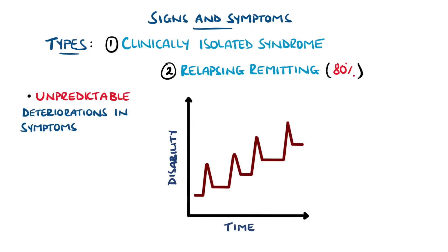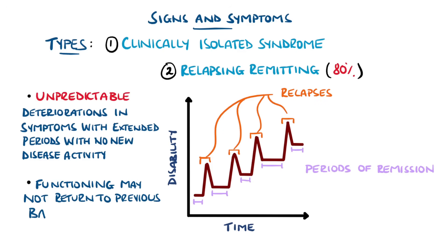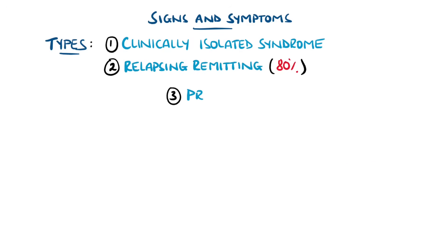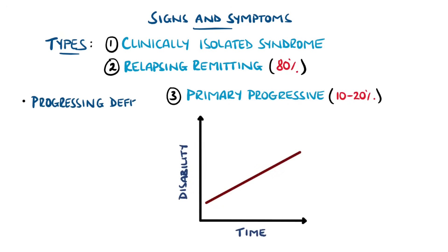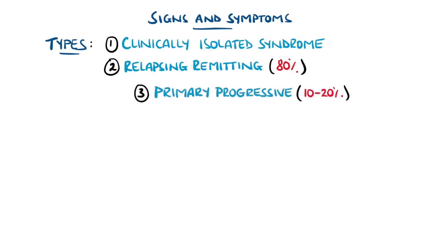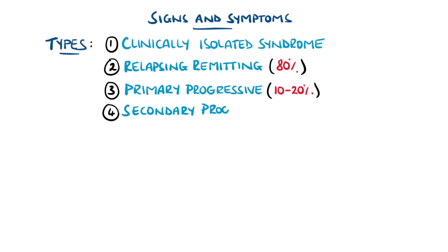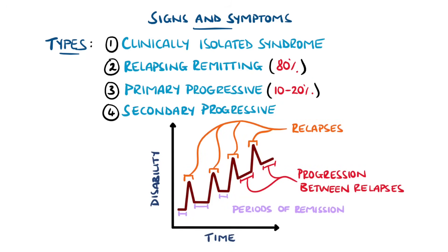Relapsing-remitting MS is characterized by unpredictable relapses with symptoms interspersed with long periods of no change; deficits can resolve or may leave some residual impairment. A minority of patients will have progressing deficits from the onset with little to no relapse or remission — this is termed primary progressive multiple sclerosis. Secondary progressive MS is where patients initially have a relapsing-remitting course but then change to have progression of disease between relapses.